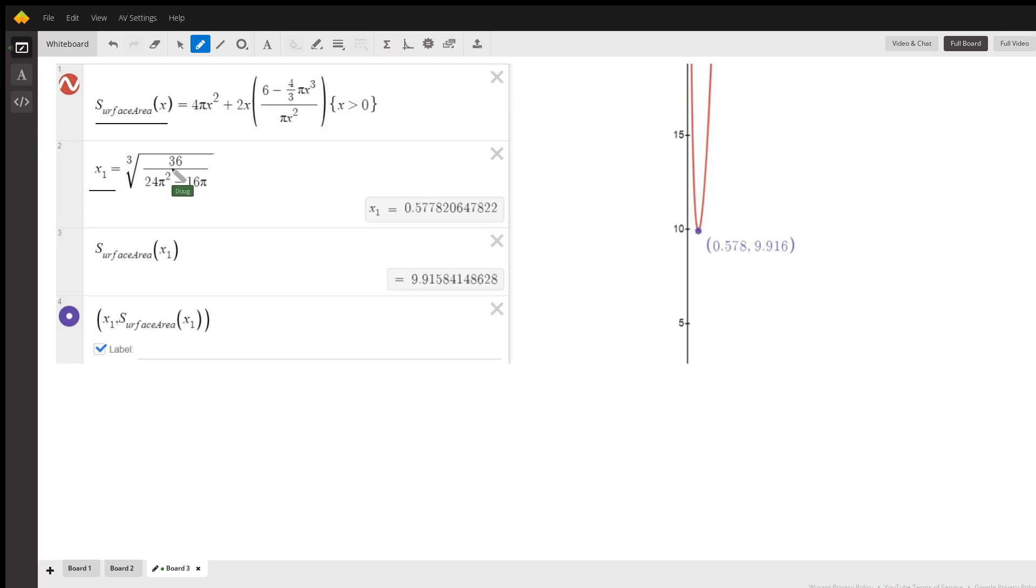Here's what it looks like on Desmos. There's the surface area function. Here's what we got for the radius, I called it x sub 1. So that's the answer to the problem right there, rounded to three decimal places, 0.578. But you can see from the graph of the surface area we're getting a relative minimum at that value of x.